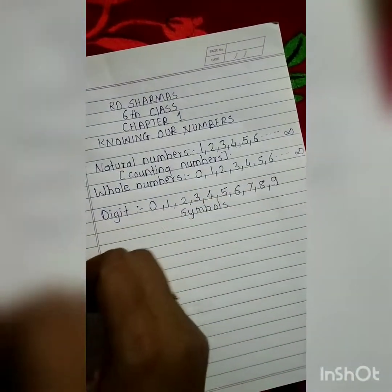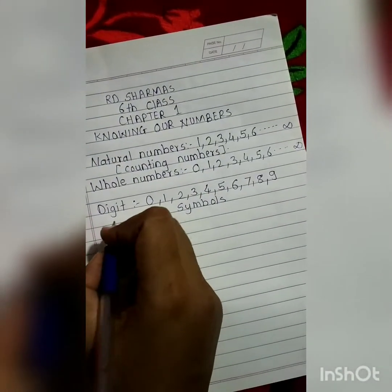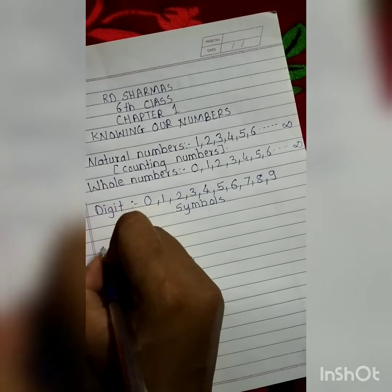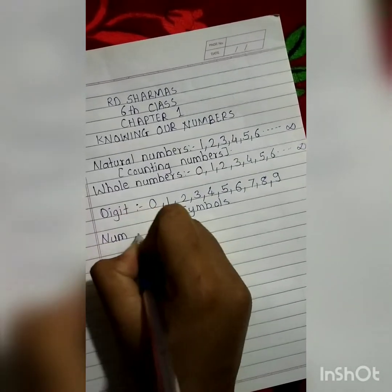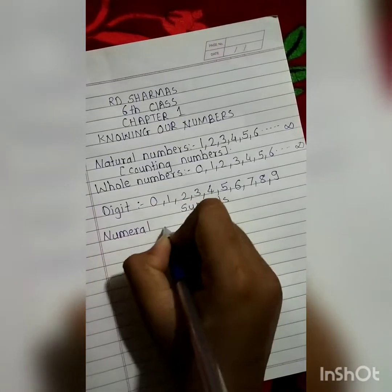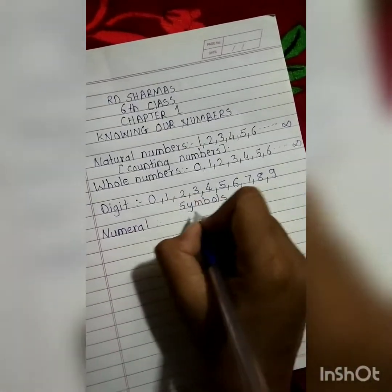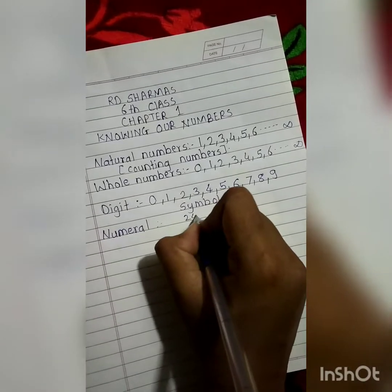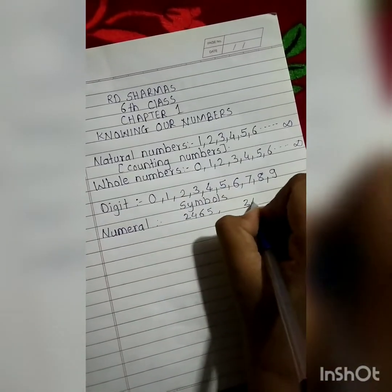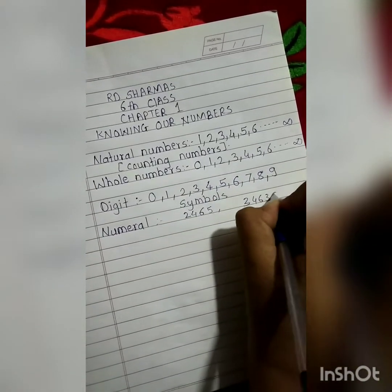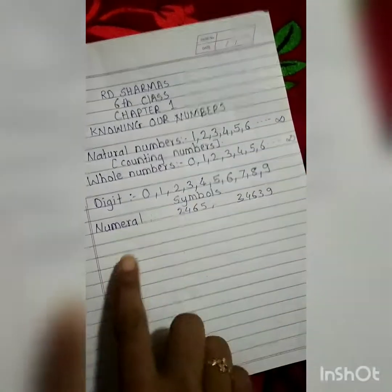Next is numeral. A numeral is nothing but the way you show a number. Here I have shown these two numbers, so these are numerals.